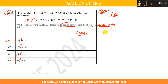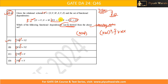Let's check option A. We take the closure of VW. The closure starts with VW itself. From V we can determine X, so we add X to the closure. Now checking if we can get any other attribute from V, W, or X: U is not present so we cannot use that dependency. However, WX determines Y and WX determines Z, and we already have WX in the closure, so we can add both Y and Z.